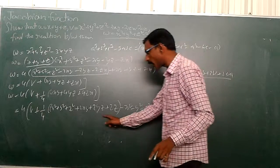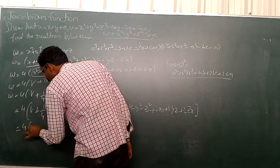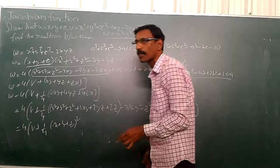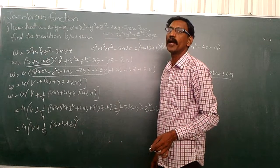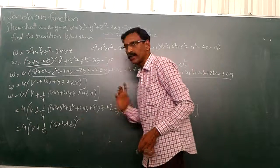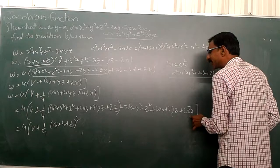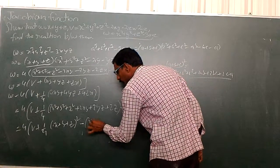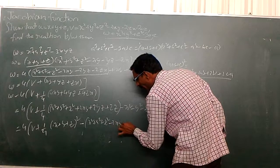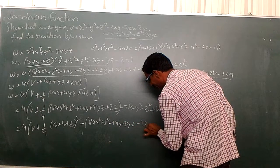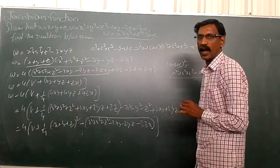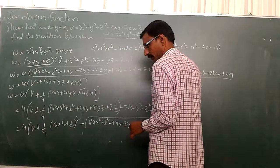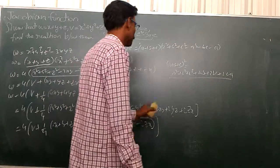In place of this I would like to write: u into v plus 1 by 4 into x plus y plus z whole square, because this is the form of a plus b plus c whole square. Then I take minus common between these terms and get minus x square plus y square plus z square minus 2xy minus 2yz minus 2zx. In that place I write v, and in place of x plus y plus z I write u.